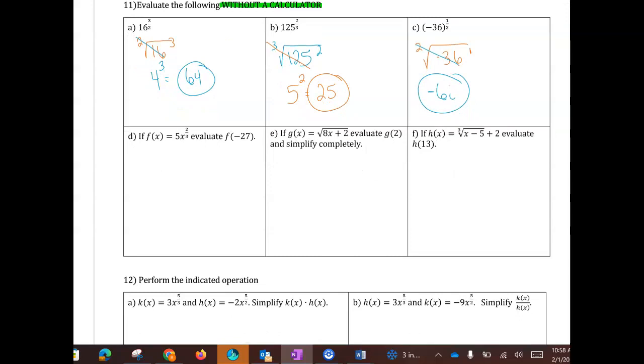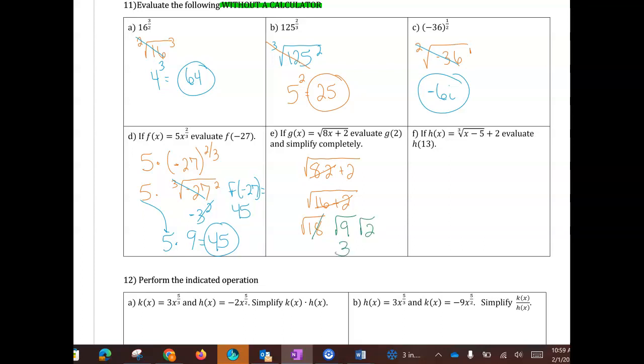A little bit of evaluating, putting some things together. I'm going to take 5 times, and in for x, I'll do negative 27 to the 2 thirds power. So I don't know what negative 27 to the 2 thirds power is, so I'm going to put it in here. I know that the cube root of negative 27 is negative 3, and the negative 3 squared is 9, which I can now bring with the 5, and I get 45. So my function, when x is negative 27, gives me an answer of 45.